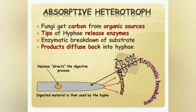Now we have to know about the heterotrophic absorption of fungi. Fungi get carbon from organic sources. The tips of hyphae release enzymes, causing enzymatic breakdown of the substrate. The products then diffuse back into the hyphae, as you can see in the picture.